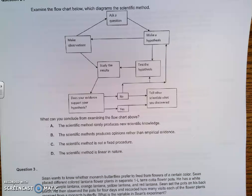And the answer for number 2 was C. The scientific method is not a fixed procedure because at various times it involves systematic observations, carefully collected evidence, logical reasoning, and imagination in the development of hypotheses and explanations.